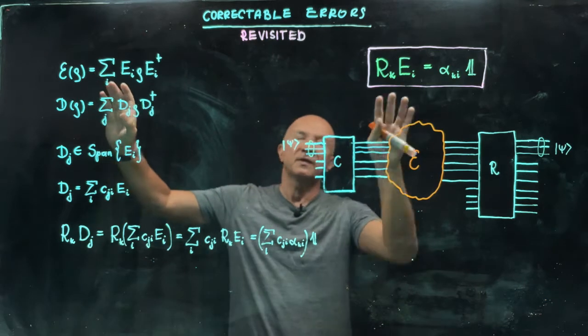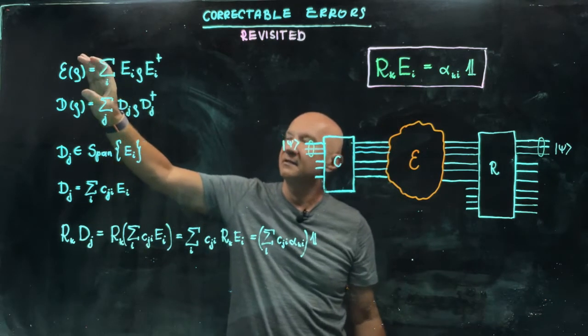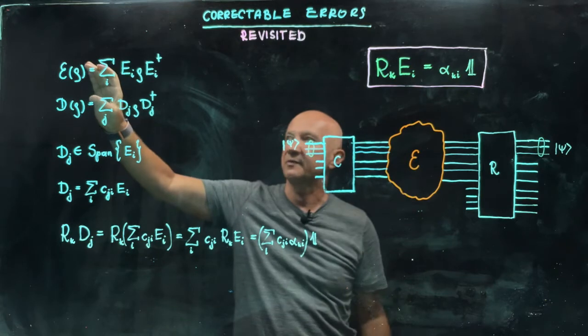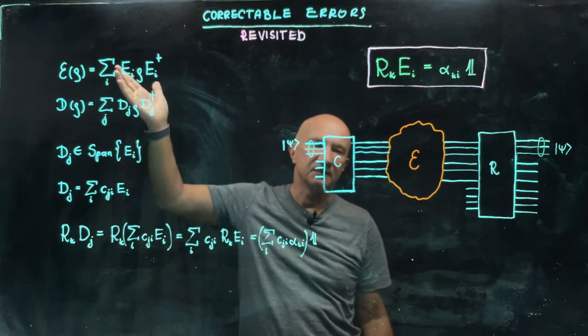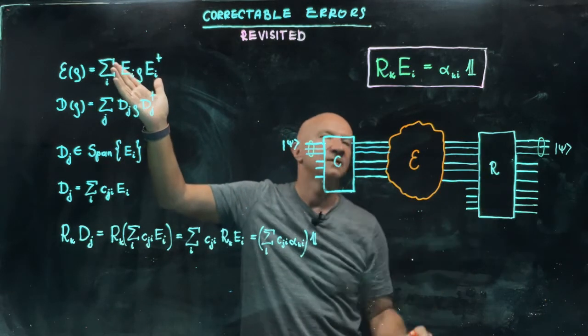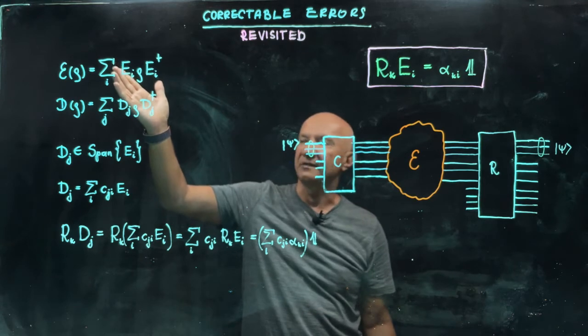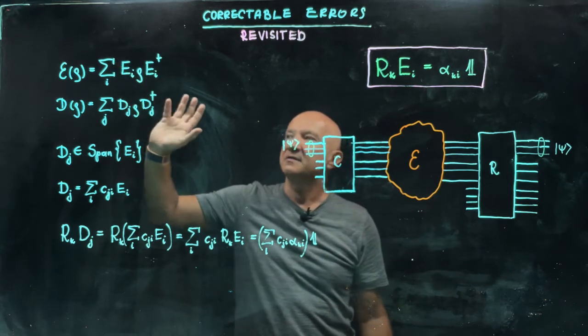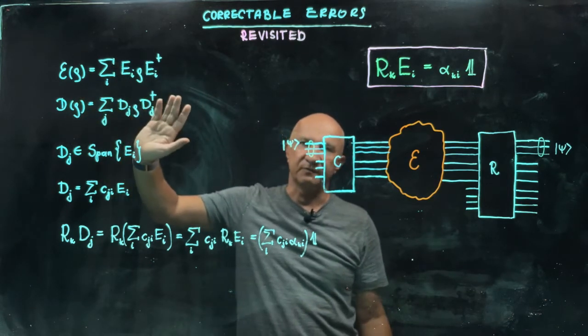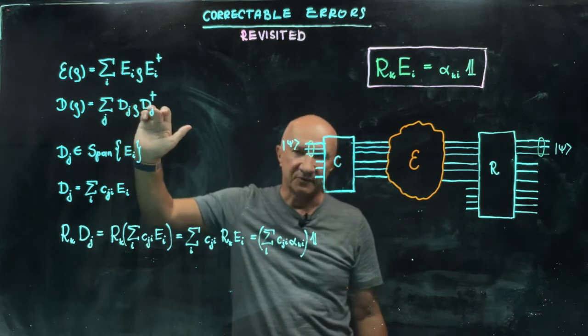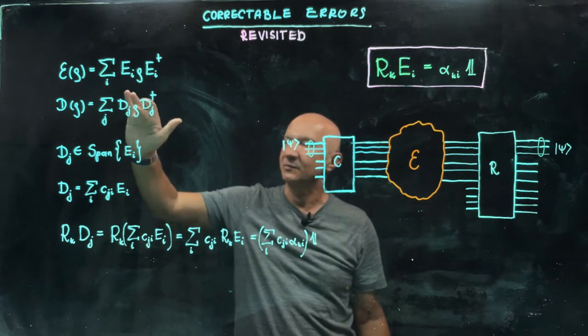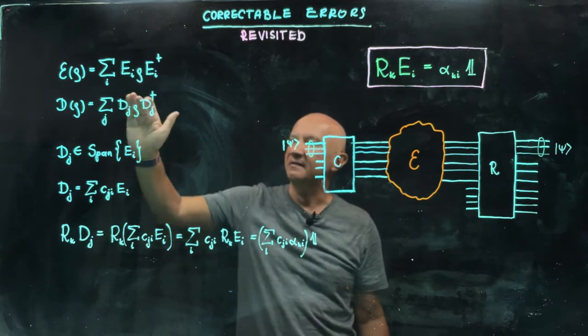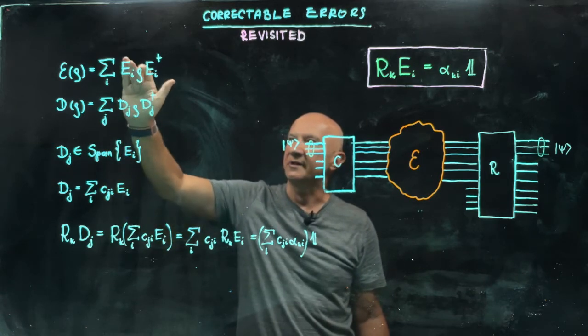The good thing is that if this particular map composed of this Kraus operator or this set of errors is invertible by this recovery channel, then so is another completely positive map such that the Kraus operators of this new completely positive map are in the span of operators EI.